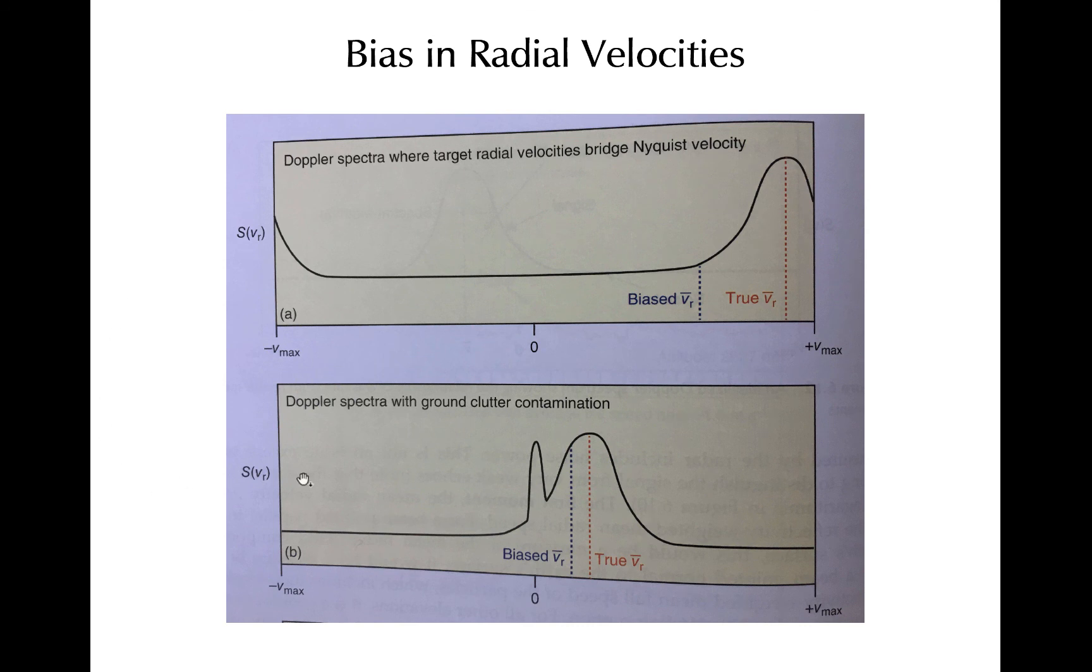The bottom example shows how ground clutter, which has zero radial velocity because it's not moving, can also contaminate a radial velocity estimate if actual hydrometeors, such as those represented by this part of the curve, are also present in the same contributing volume. The actual hydrometeors would have a mean radial velocity along the peak of this curve, but the zeros from the ground clutter would bias it too low.